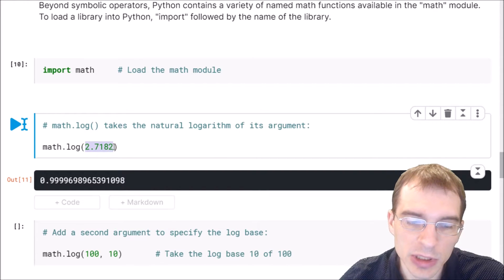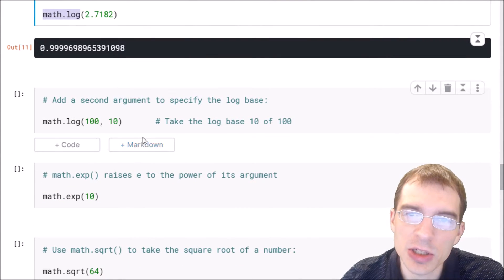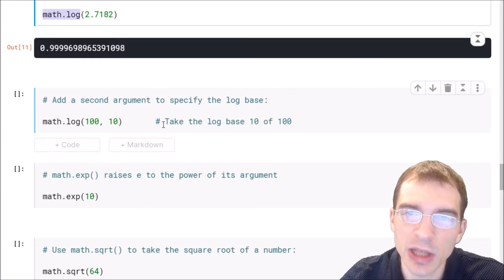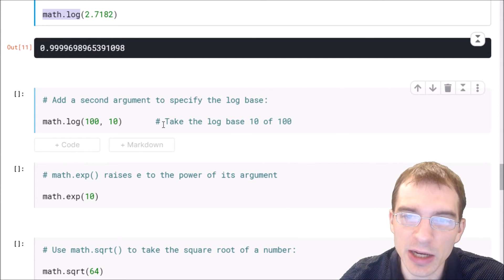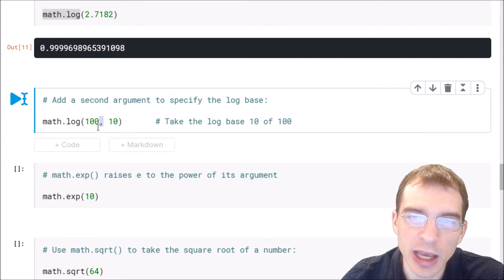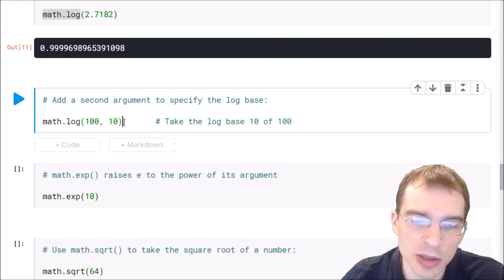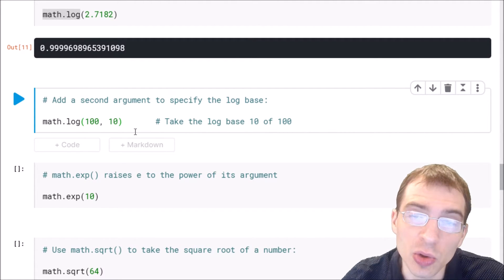So we run math dot log and we get something very close to 1 because this number is very close to the constant e, which is used in the default logarithm function, which is the natural log. If you want to do a logarithm function with a different base than the natural log, you can specify extra arguments. Here we're going to do math dot log, take the log of 100, but then add an extra argument, 10. So we're saying take the log of 100 with a base of 10 instead of using the natural logarithm. The log base 10 of 100 should be 2 because 10 raised to the second power is 100.